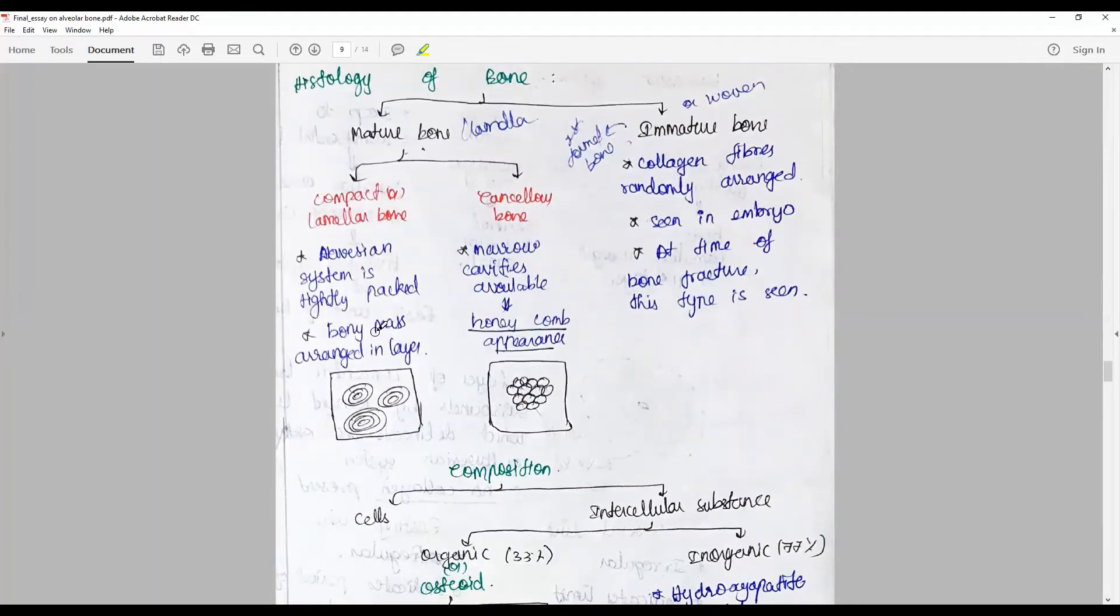The Haversian system: the bones are packed in the lamellar system, tightly arranged, and bone mass is arranged in layers, whereas here cavities are available giving it a honeycomb appearance. Immature bone or woven bone has collagen fibers randomly arranged.